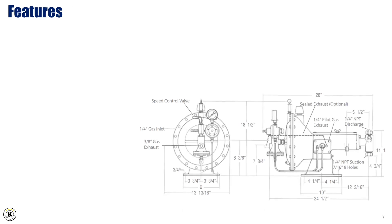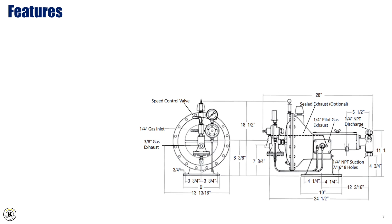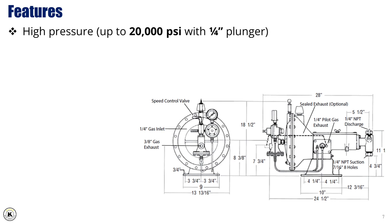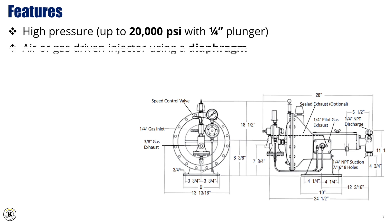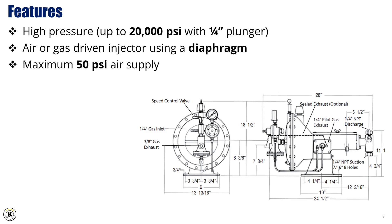Features. The TechSteam chemical injection pump is engineered for demanding well testing environments. It is capable of operating at high working pressures, up to 20,000 PSI when equipped with a quarter-inch plunger, making it suitable for high-pressure injection applications. This pump is air or gas driven, utilizing a diaphragm mechanism that operates efficiently with a maximum air supply of just 50 PSI, making it versatile and easy to integrate in remote or hazardous areas.